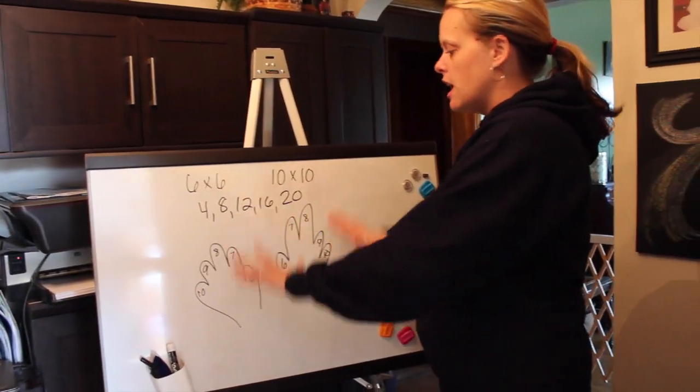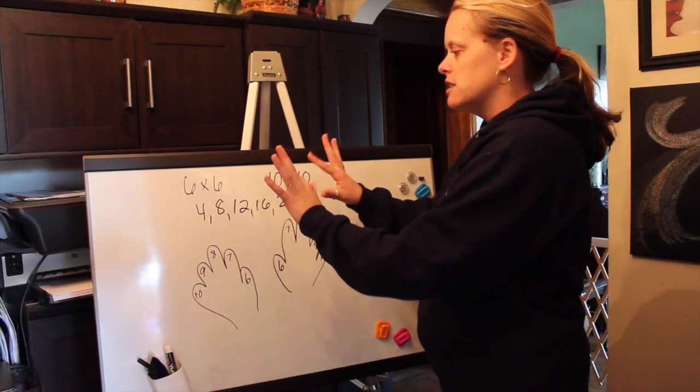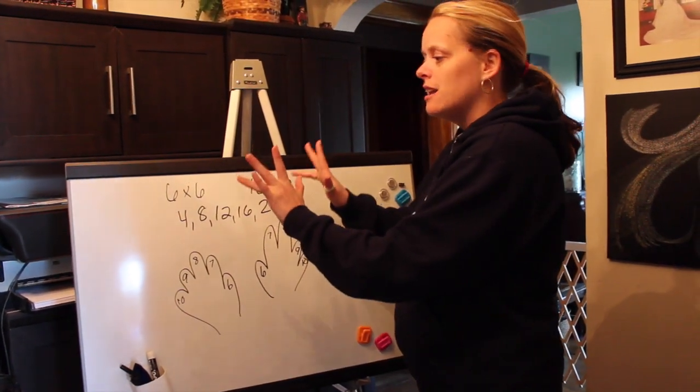So basically you're going to take your fingers, and just like I've numbered them here on my really bad drawing, your thumbs are 6's, pointer fingers are 7's, 8, 9, and 10.